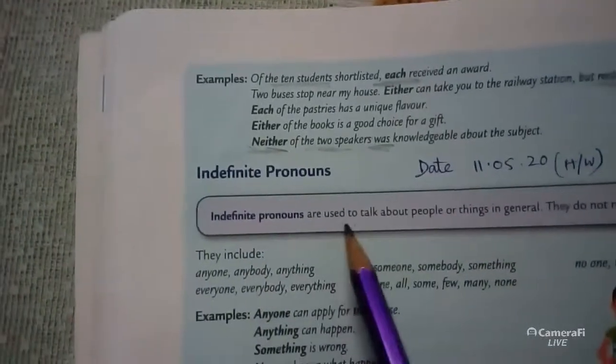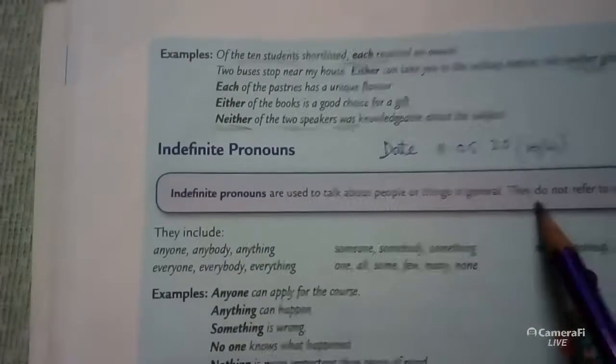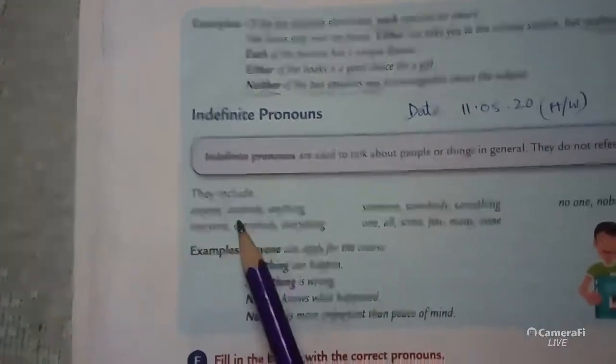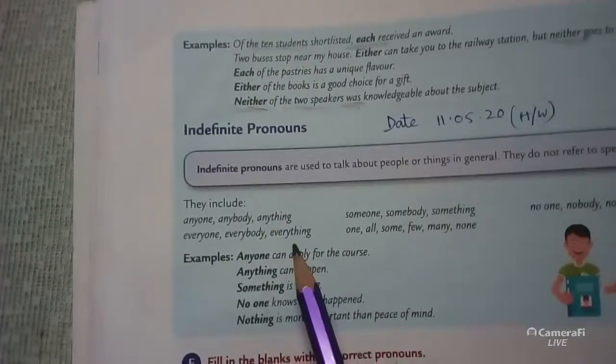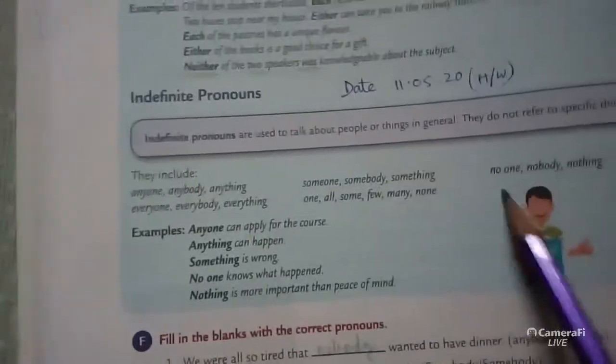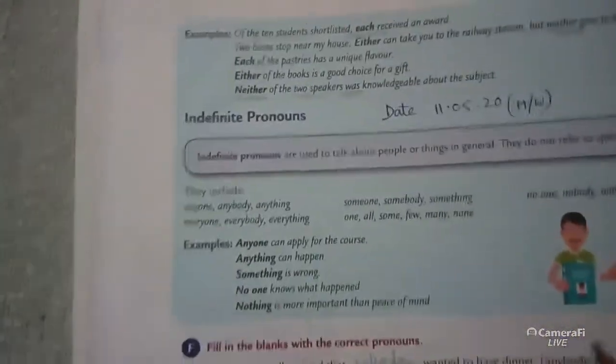Now indefinite pronouns. Indefinite pronouns are used to talk about people or things in general; they do not refer to specific things. The words are: anyone, anybody, anything, everyone, everybody, everything, someone, somebody, something, one, all, some, few, many, none, no one, nobody, nothing. These words are used as indefinite pronouns when we don't know how many are there. Examples: 'Anyone can apply for the course.' 'Anything can happen.' 'Something is wrong.' 'No one knows what happened.' 'Nothing is more important than peace of mind.'